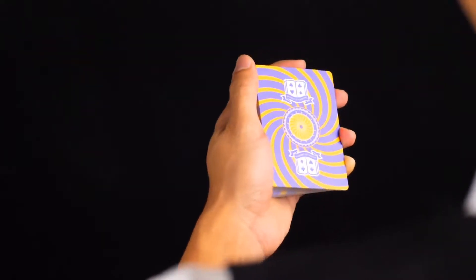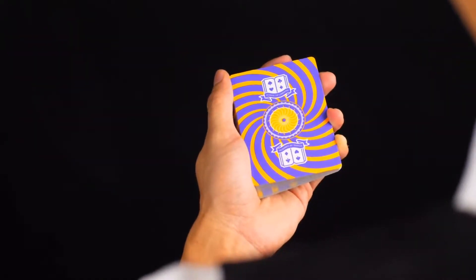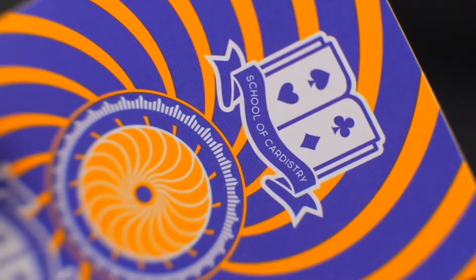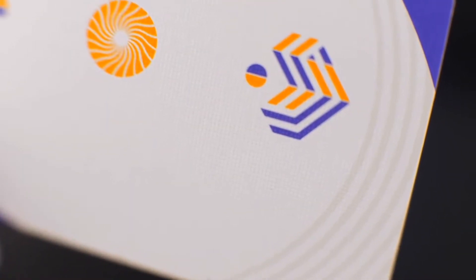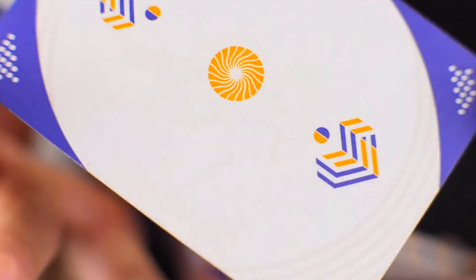With spirals that echo beyond the cards, the use of the Pantone color of the year ultraviolet and its split complementary color orange brings vibrance and life to your cardistry.